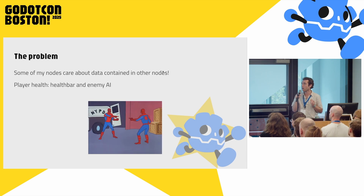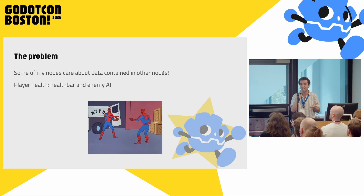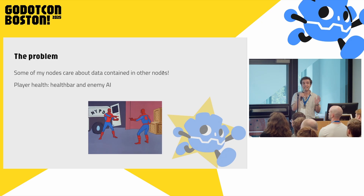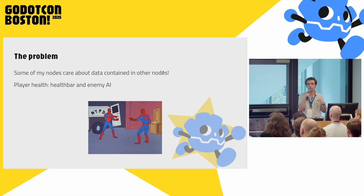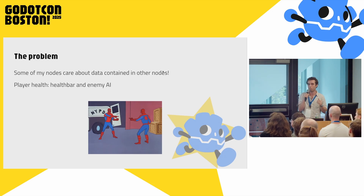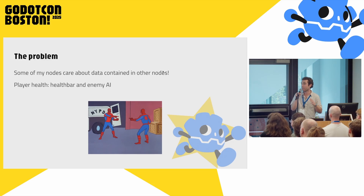So what's the problem? Some of the nodes in my game care about data that's contained in other nodes. A simple example: we have a player who has health, and there's a health bar that wants to represent that health, and maybe our enemy AI cares about your health. Maybe if you're low on health, they want to be aggressive because they think they're going to finish you off, or maybe they'll chill out and give you an easy time. So this player health is relevant to two different nodes.